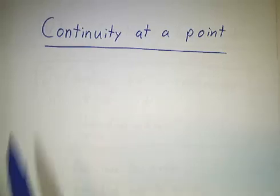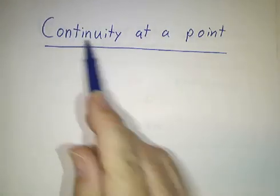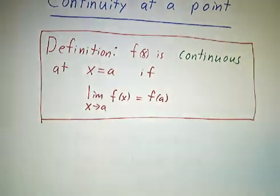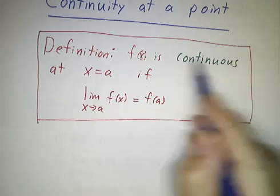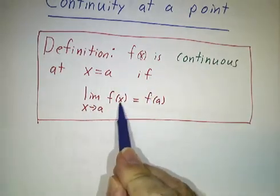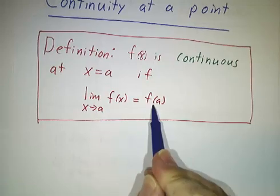Hi. In this video, we're going to go over what it means for a function to be continuous at a point. The definition is pretty straightforward. A function f is continuous at a point x equals a if the limit as you approach that point is the value of the function at the point.